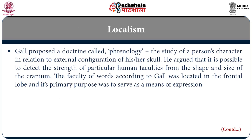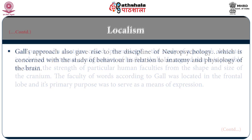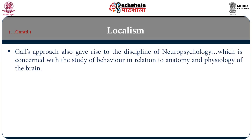Regarding localism, Gall is associated with the French neuroposition. Gall proposed a doctrine called phrenology, which is the study of a person's character in relation to the external configuration of his or her skull. He argued that it is possible to detect the strength of particular human faculties from the shape and size of the cranium — the skull. He also said that the faculty of words was located in the frontal lobe and its primary purpose was to serve as a means of expression. Gall's approach eventually gave rise to the discipline of neuropsychology, which is concerned with the study of behaviour in relation to anatomy and physiology of the brain.